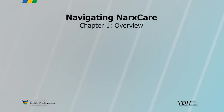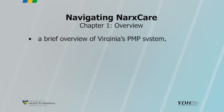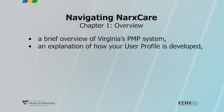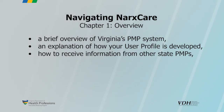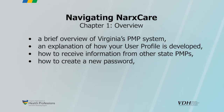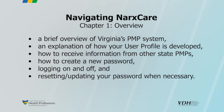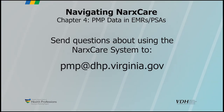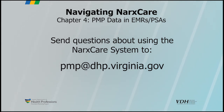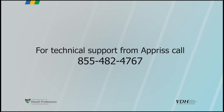To review, this episode of the NarcsCare tutorial presented a brief overview of Virginia's PMP system, an explanation of how your user profile is developed, how to receive information from other state PMPs, how to create a new password, logging on and off, and resetting or updating your password when necessary. If you have additional questions, contact Virginia's PMP at this email address. For technical support from APRIS, please call this number.